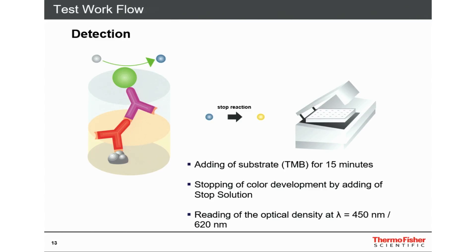You then apply TMB to make the color reaction visible. After 15 minutes, you stop the reaction and measure it in a photometer — an ELISA reader.